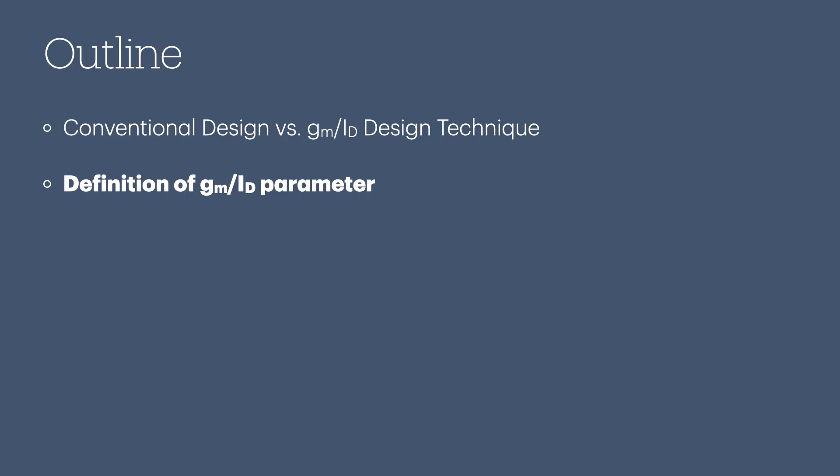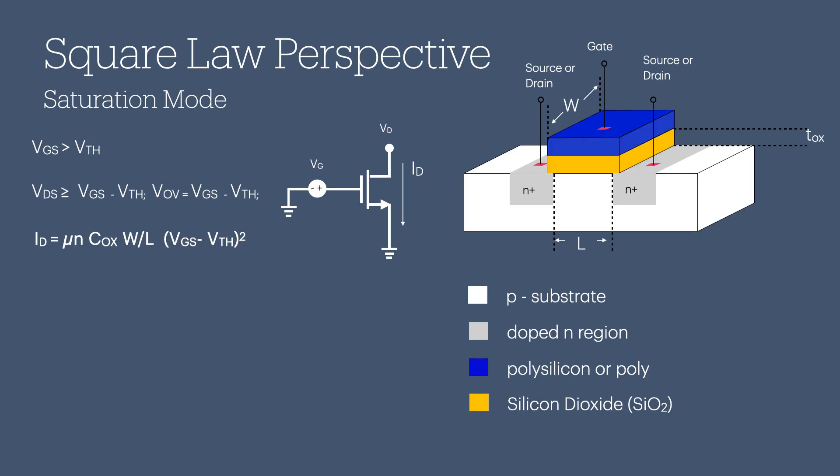In this section, we will discuss the meaning of the GM over ID parameter. Consider the NMOS and its cross-section displayed on the right side of the slide. An NMOS transistor enters saturation mode when the gate-to-source voltage (VGS) exceeds the threshold voltage (VTH), and the drain-to-source voltage (VDS) is at least equal to VGS minus VTH. The difference, VGS minus VTH, is referred to as the overdrive voltage (VOV). The square law equation for drain current (ID) is valid only when the NMOS is operating in saturation mode.